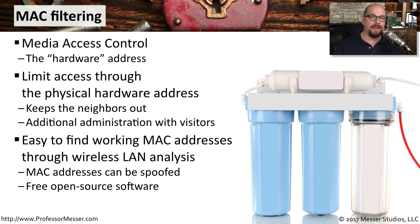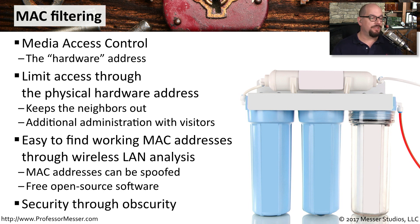One of the problems with MAC filtering is that it is very easy to circumvent. All you need is a packet capturing device to see what MAC addresses are allowed to communicate on the network, and then simply spoof that MAC address on your device. This is another example of security through obscurity — you may be trying to set up MAC filtering as a security mechanism, but it's so simple to circumvent that it really provides no security at all.